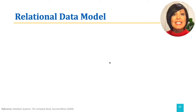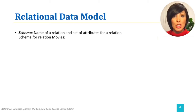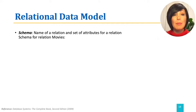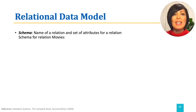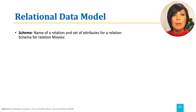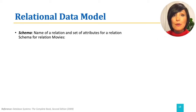For a relational data model, schema defines a relation with a name and a set of attributes for it. A relation in a relational data model is a two-dimensional table. The name of the relation is the name of the table, and the name of the attributes are the names of the columns of this table. The relations do not prescribe how they are implemented or stored on the disk or how they are retrieved from it. The relation is therefore physical structure independent.